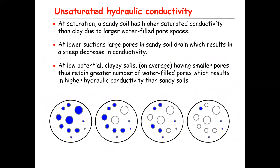We can answer these two questions by looking at this qualitative picture. When the system is fully saturated, coarse-textured porous media like sand have larger pores compared to clay-type material. Since the pores are larger, the hydraulic conductivity is greater — the ability of the medium to transport water is higher when pores are larger. That's why saturated hydraulic conductivity of sand is more than loam, and loam is more than clay.